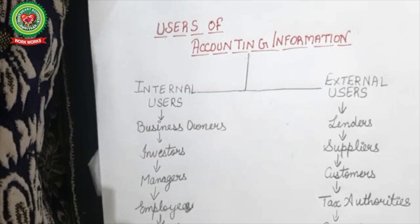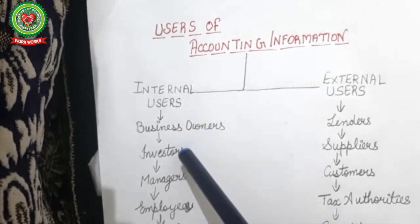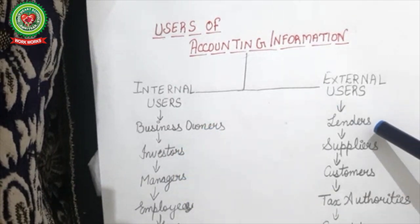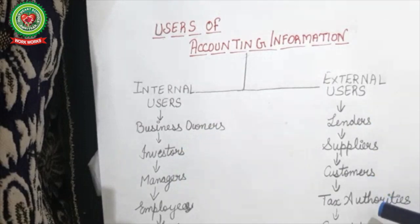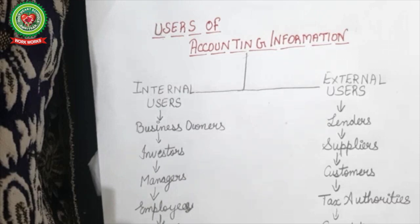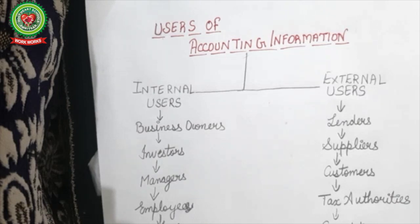Users of accounting information are classified as internal and external. Internal users include business owners, investors, managers, and employees. External users include lenders, suppliers, customers, and tax authorities. Business owners — the persons who invest in the business — are internal users with full interest in business operations. Investors are persons who advance or lend money for the sake of earning interest.